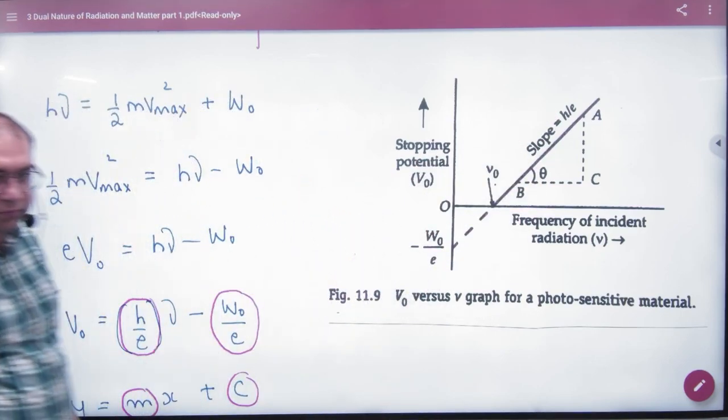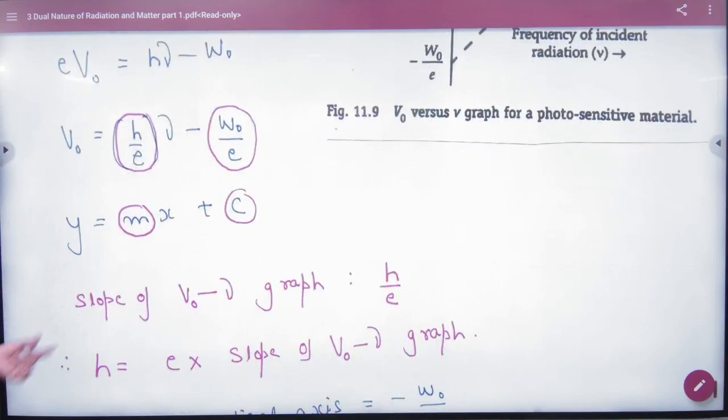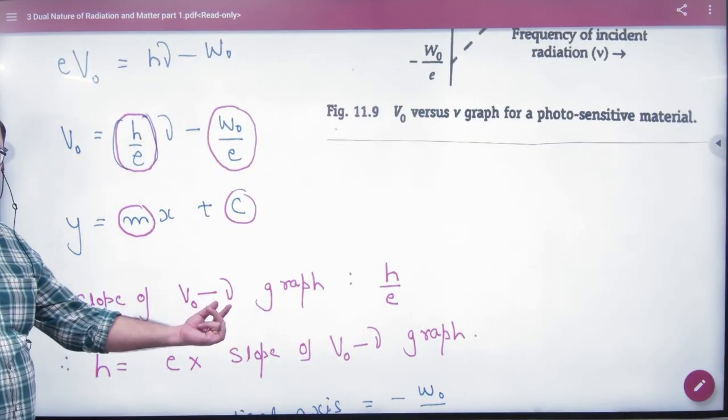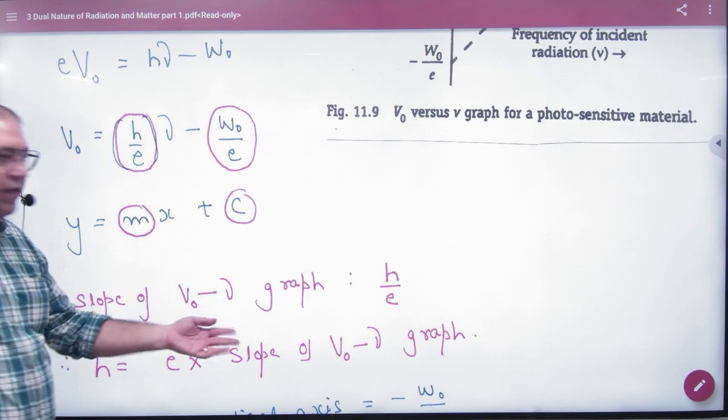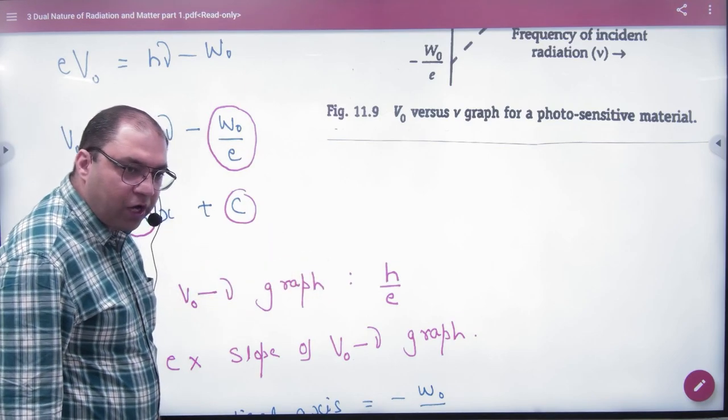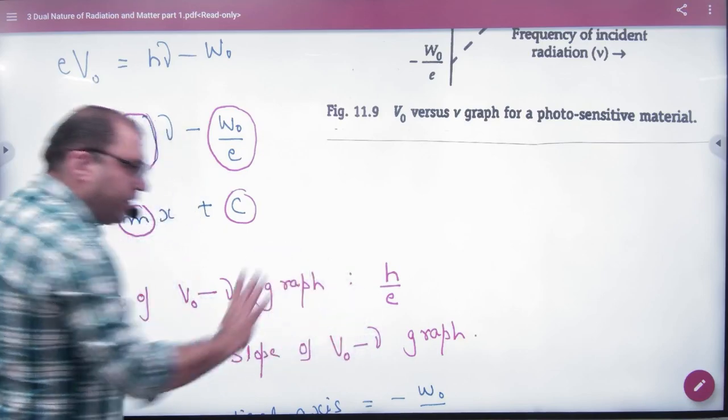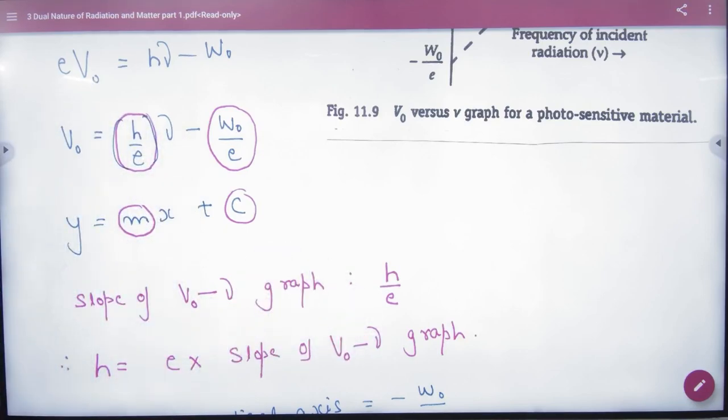Then you have to write at the end that the slope of stopping potential versus frequency graph, that slope value is h/e. So h equals e times slope of V₀ versus frequency graph.